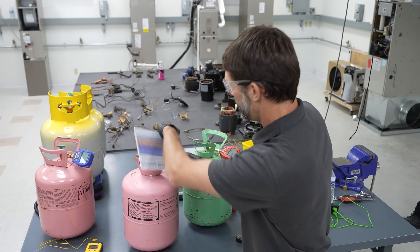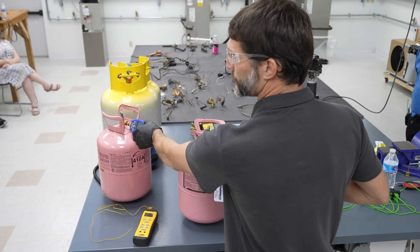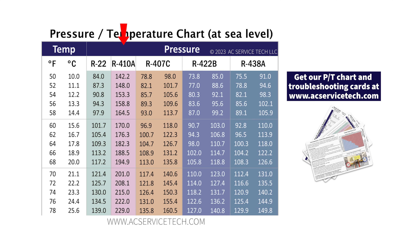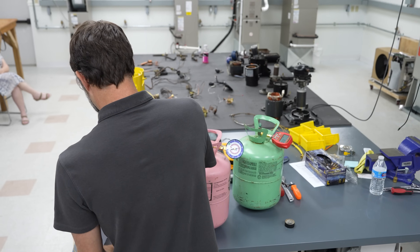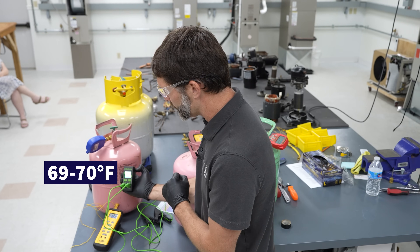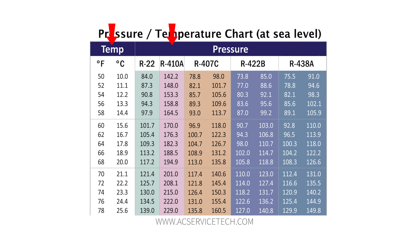Let's look at some of these refrigerant bottles. Can anybody read the pressure on this gauge? 200.5. So on our PT chart, let's look at 200.5 — it's in the pink, between 201 and 208. Line it up with the temperature on the side — what temperature does it say it should be in the room surrounding the bottle? About 72 degrees, so about 71 degrees. This temperature meter says 68 to 69, and this one says about 69 to 70 degrees. It's like a thermometer — if we know the pressure, we know the temperature, and vice versa.